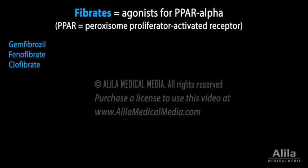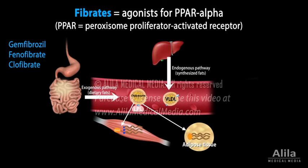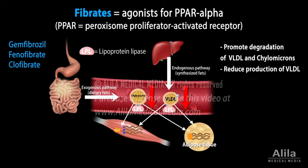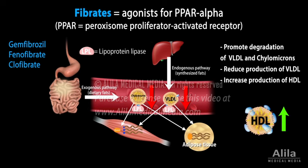Fibrates are agonists for PPAR-alpha. PPARs are transcription factors that mediate the effect of dietary fatty acids on lipoprotein metabolism. Activation of PPAR-alpha has several effects: it promotes degradation of triglyceride-rich particles by lipoprotein lipase, it reduces production of VLDL, and increases production of HDL by up-regulating apolipoprotein A1, the major protein component of HDL.